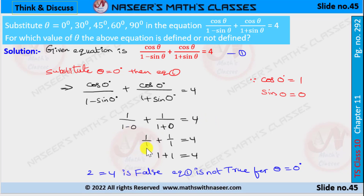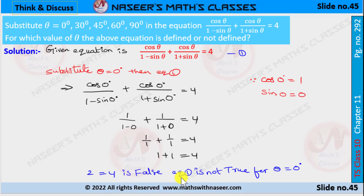1 − 0 = 1 and 1 + 0 = 1. Therefore we can write 1/1 + 1/1 = 4, and 1/1 = 1, so 1 + 1 = 4. But 1 + 1 = 2, giving us 2 = 4. This is false. So equation 1 is not true for θ = 0°.